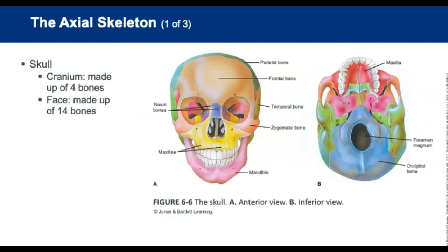The axial skeleton runs from the skull down to the coccyx — the center area of the body — and consists of 28 bones. Starting with the skull, it consists of 28 bones divided into three groups: the cranium, facial bones, and three small bones in the ear.